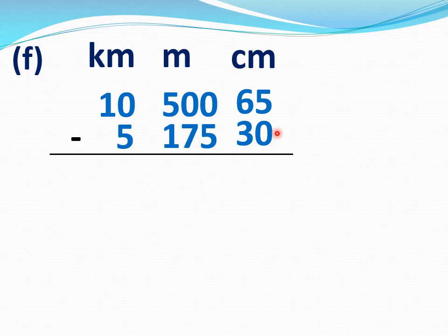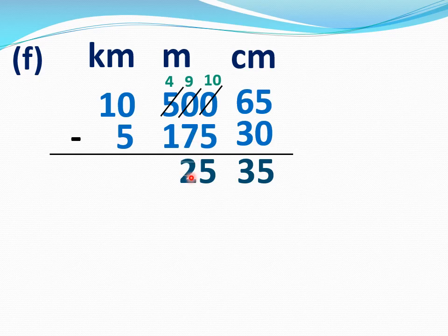Now subtract this. 5 minus 0 is 5. 6 minus 3 is 3. Now see, this 0 is smaller than 5, so we will borrow from the next number. This is 0, we can't borrow from 0, so we will borrow from the next number. This 5 will become 4 and this 0 will become 10. 10 minus 5 is 5. This 0 will become 9. 9 minus 7 is 2. 4 minus 1 is 3.